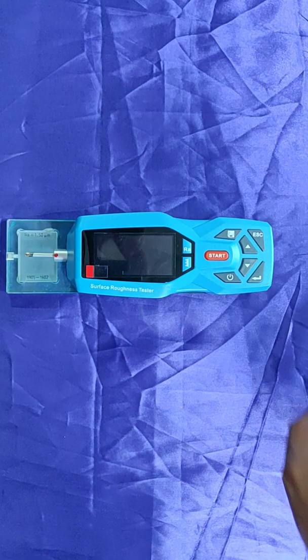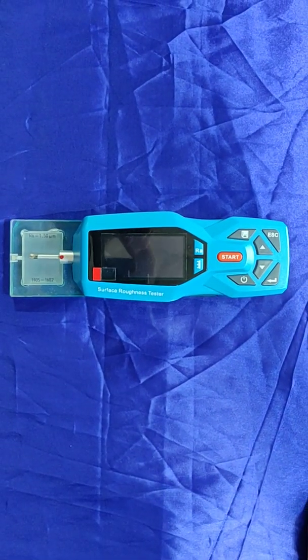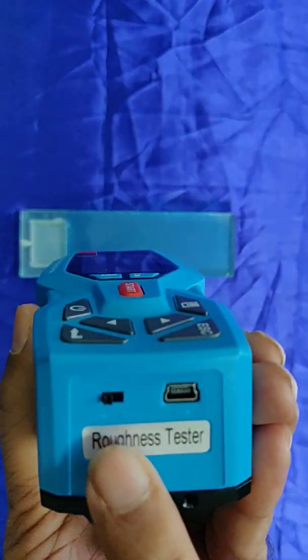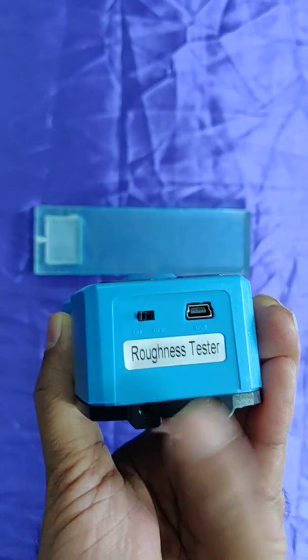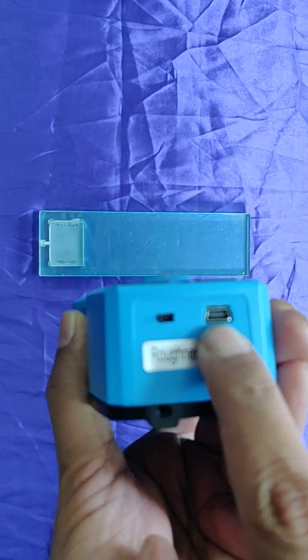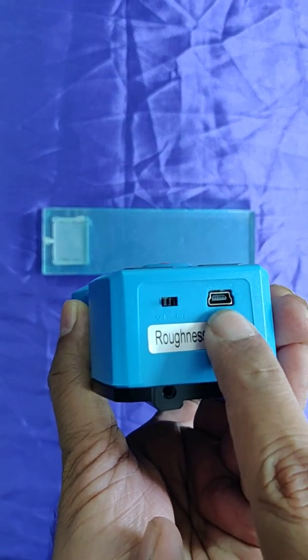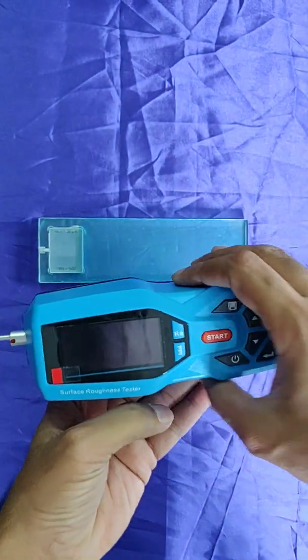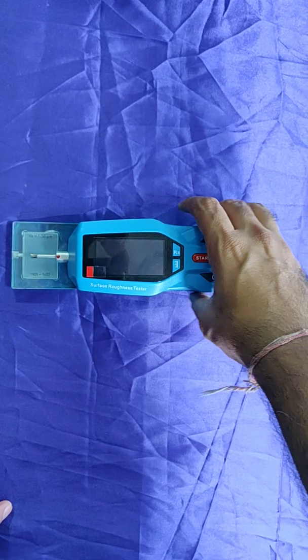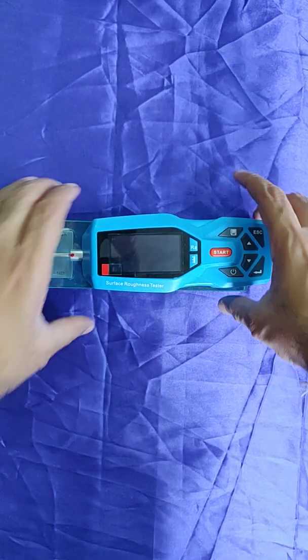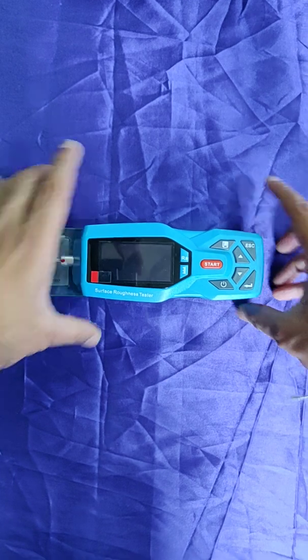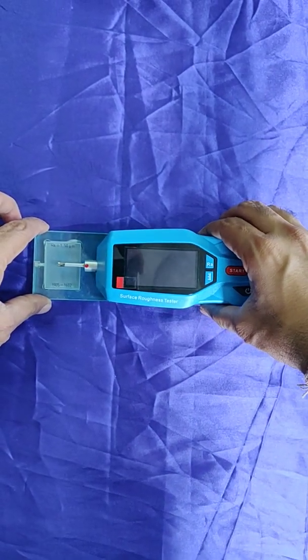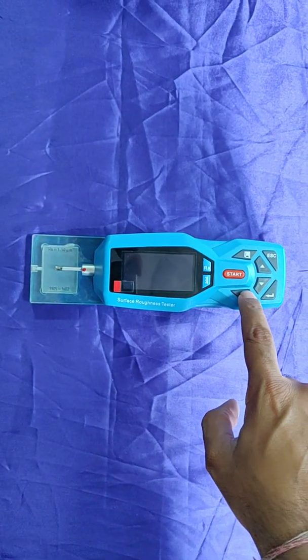Now I will explain you each and every part of this roughness tester. First of all, on and off. This is to charge as well as data transfer - both ways you can do this. So we first switch it off. We keep it here. Now this is a power button.